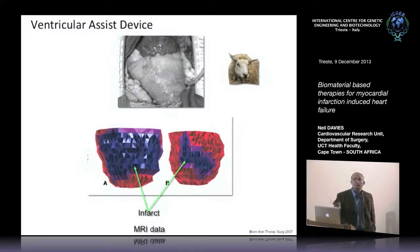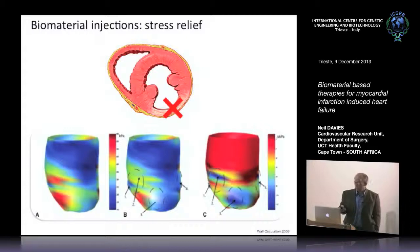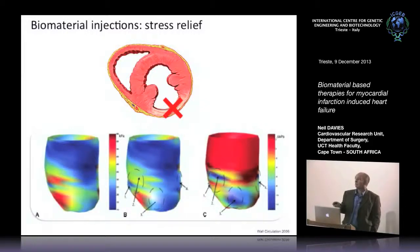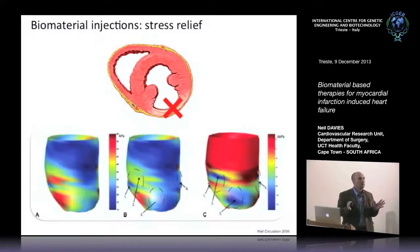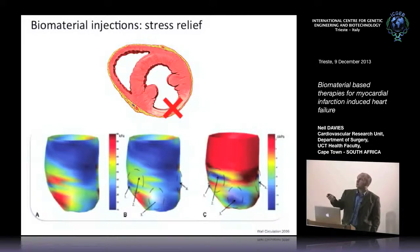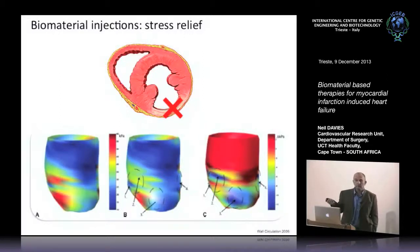People have interest in biomaterials because we can stop the wall thinning — another driving force towards heart failure. If we inject biomaterials — and when I talk about biomaterials here I mean hydrogels, something that will gel inside the heart — you can inject into the wall and simply by preserving wall thickness, reduce stress. This is a study from Guccione's group in California using a finite element model of the heart.